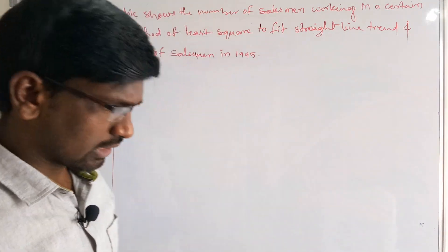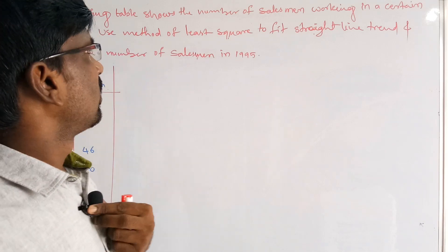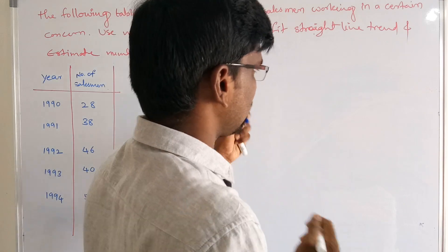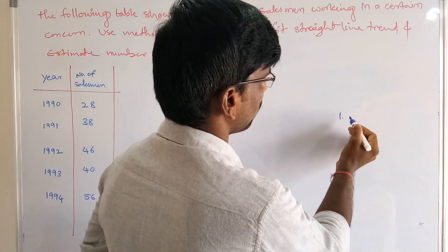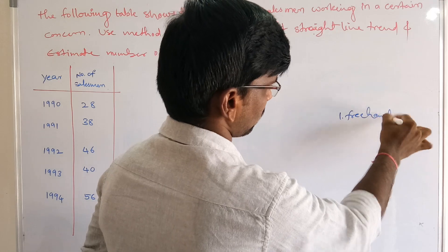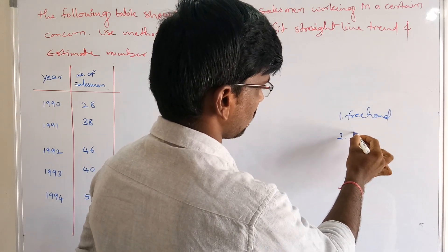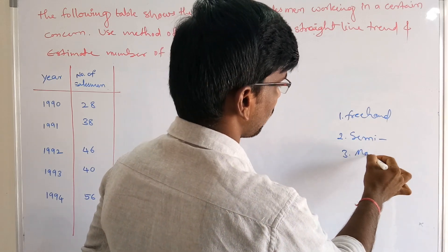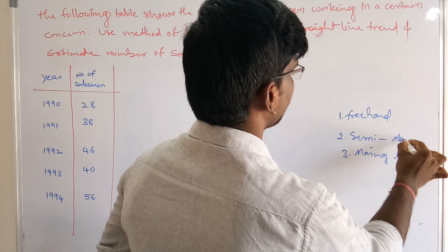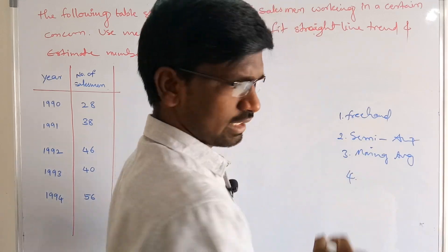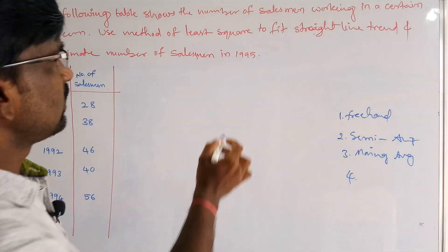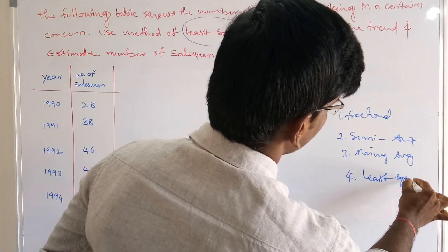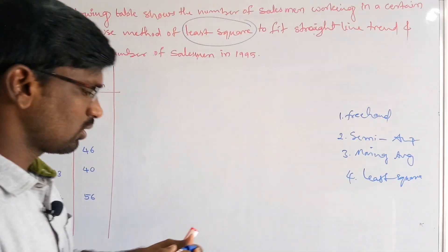Hello students. Today we are going to discuss one of the methods in time series. We already discussed the free-hand curve method, the semi-average method, the moving average method, and now the fourth method is the least square method.